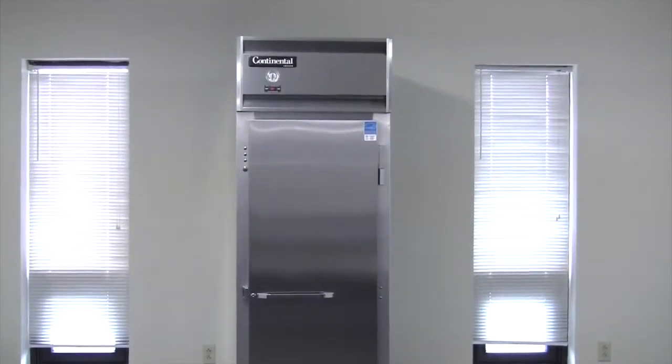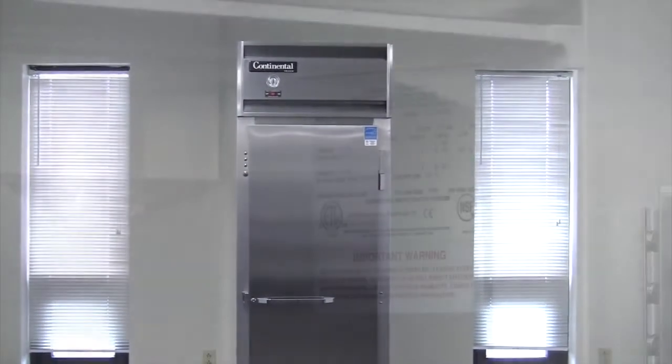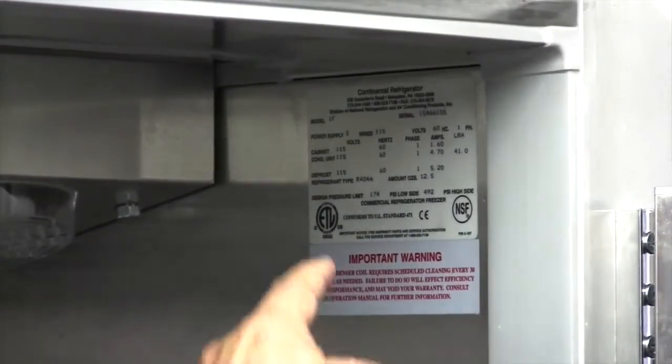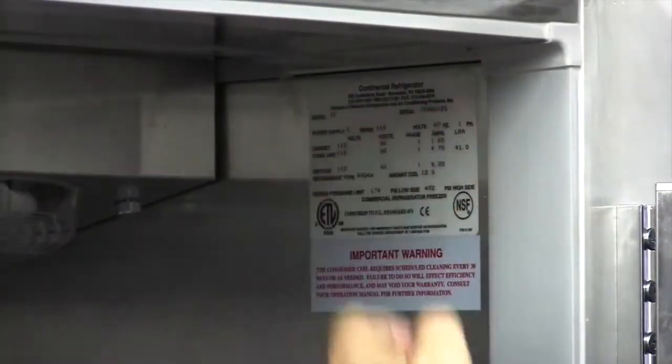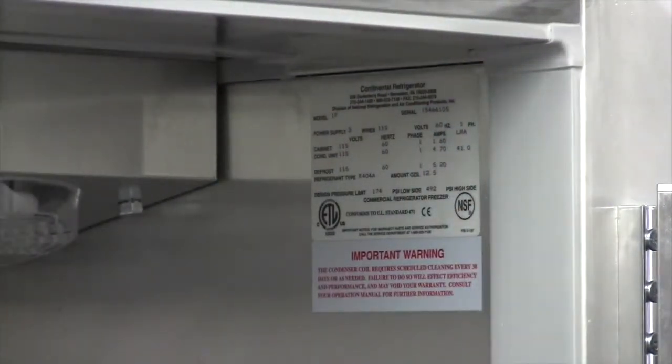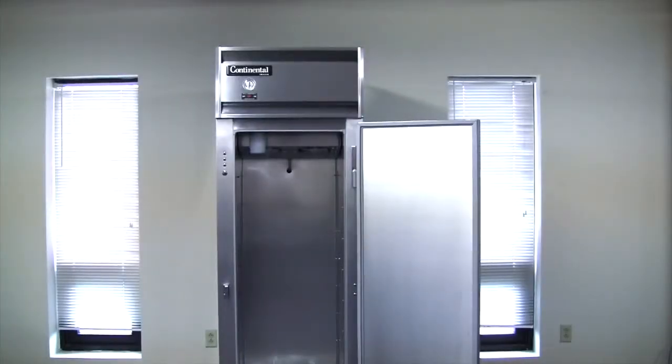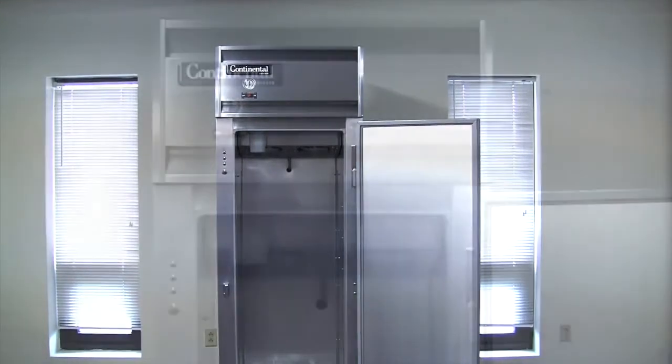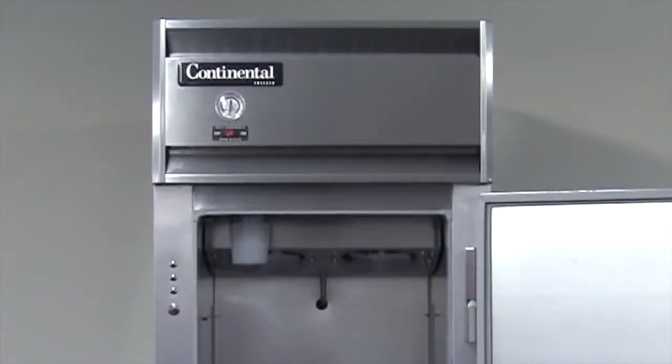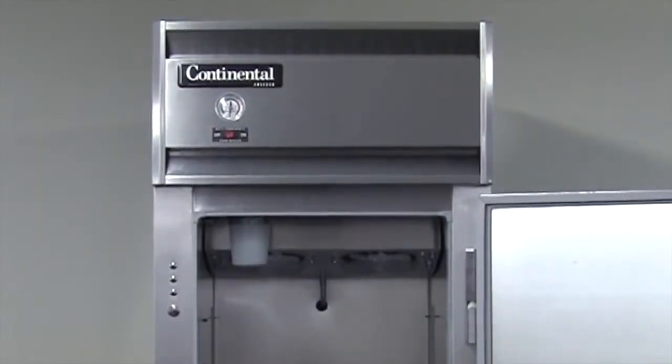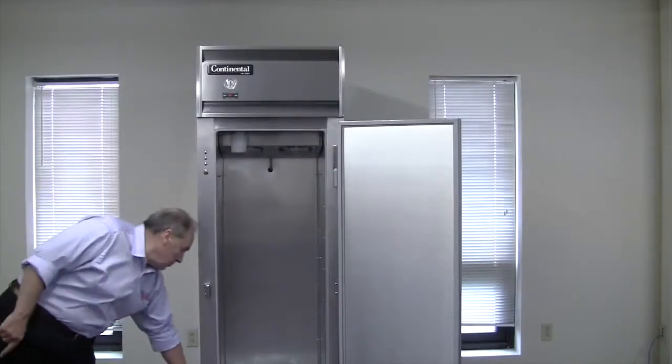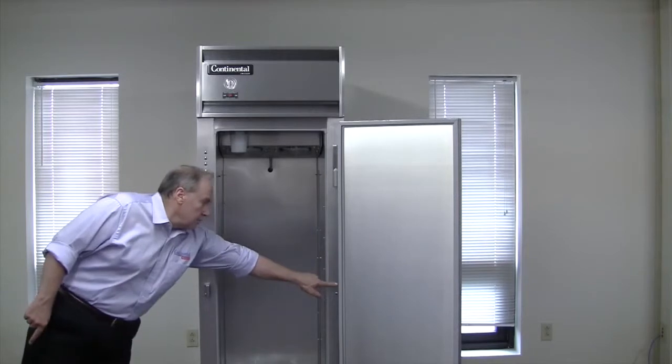all single-section cases are not able to be rehinged. To confirm, you can either contact the factory with the model and serial number located on the tag on the inside wall. Another way to know if your unit is able to be field-reversed is if you see an extra set of holes as well as the silver stainless steel plug button for the light switch and the lock keeper holes. That will indicate that this unit is able to be field-reversed.